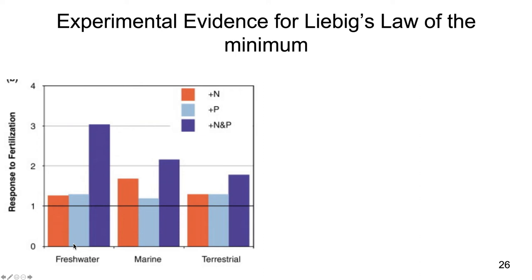Freshwater is like ponds and streams, marine is like saltwater oceans and seas, and terrestrial is on land. What they looked at is the overall response to fertilization with either nitrogen, phosphorus, or nitrogen and phosphorus. The larger the bar, the greater the increase in growth was as a result of adding these different nutrients across the baseline.